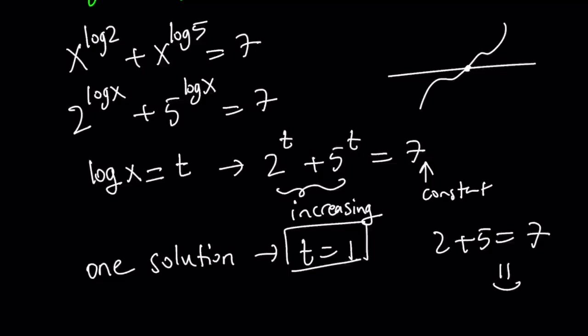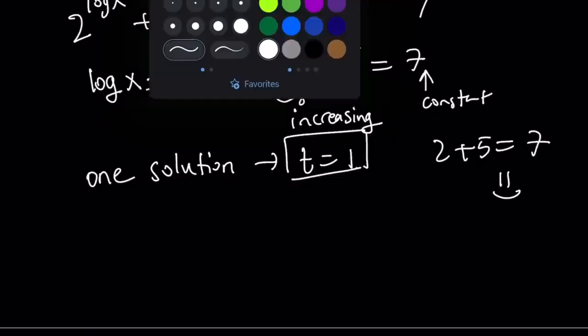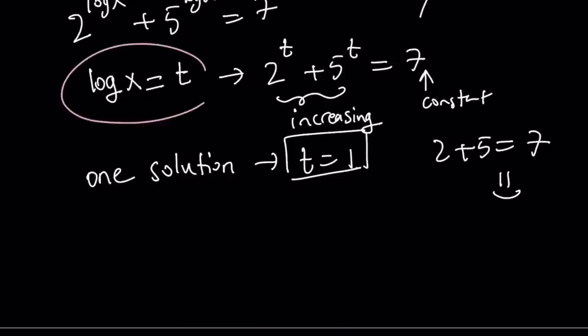But we're not looking for t. Well, maybe sometimes, especially after a meal. But anyways, we're looking for x. What's the relationship? The relationship between t and x is given by this. Log x equals t. If t equals 1, that implies log x equals 1. And by definition of logs, you get x equals 10. So the answer is 10.